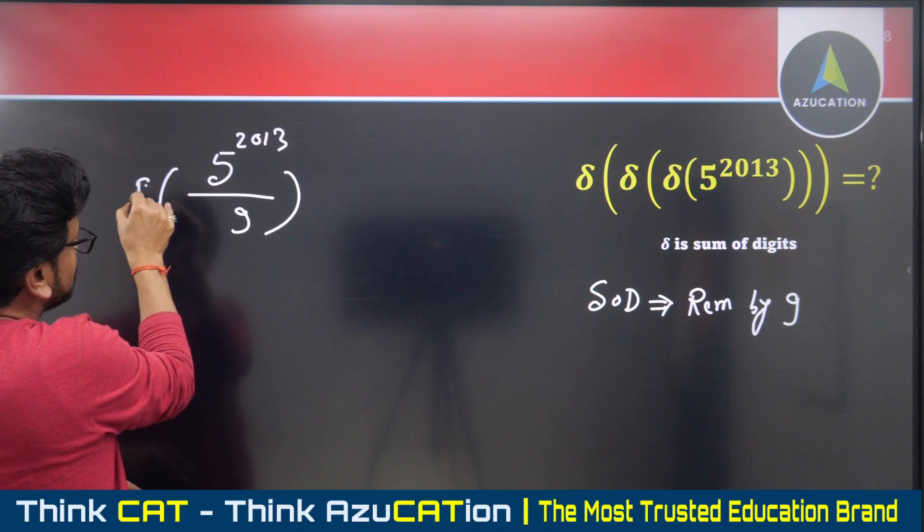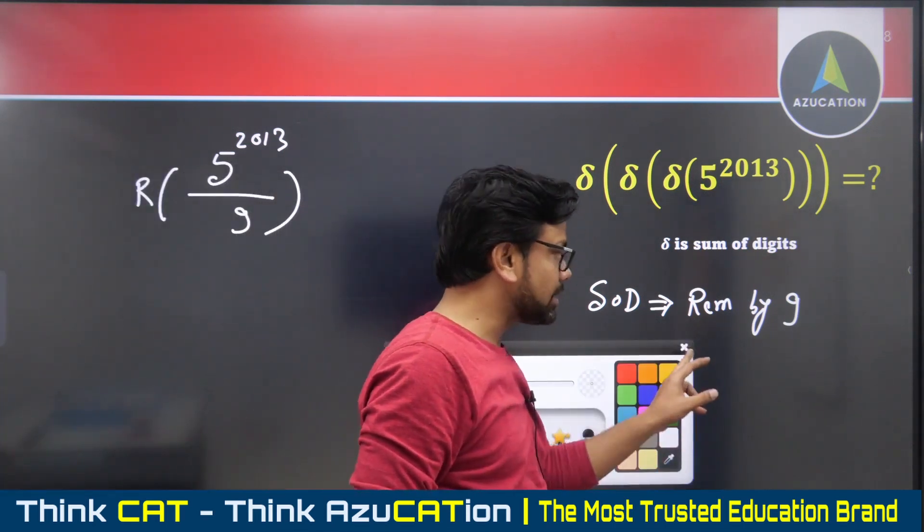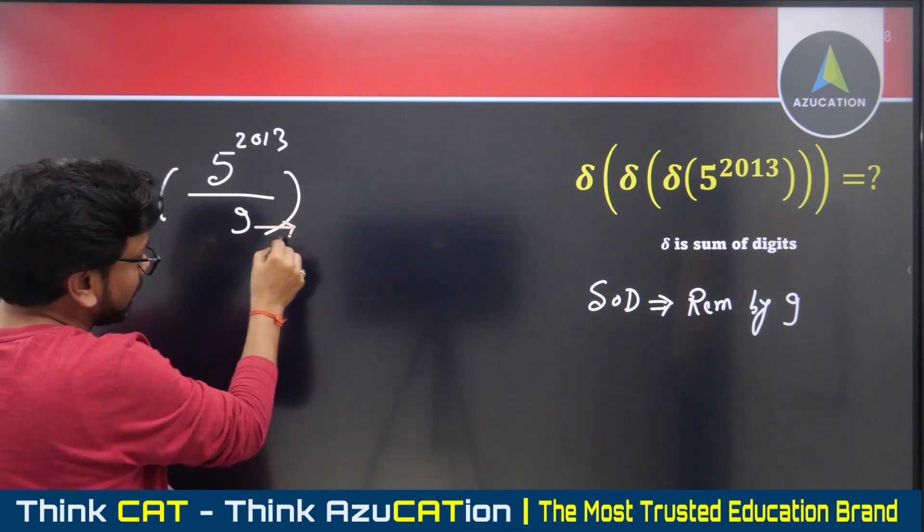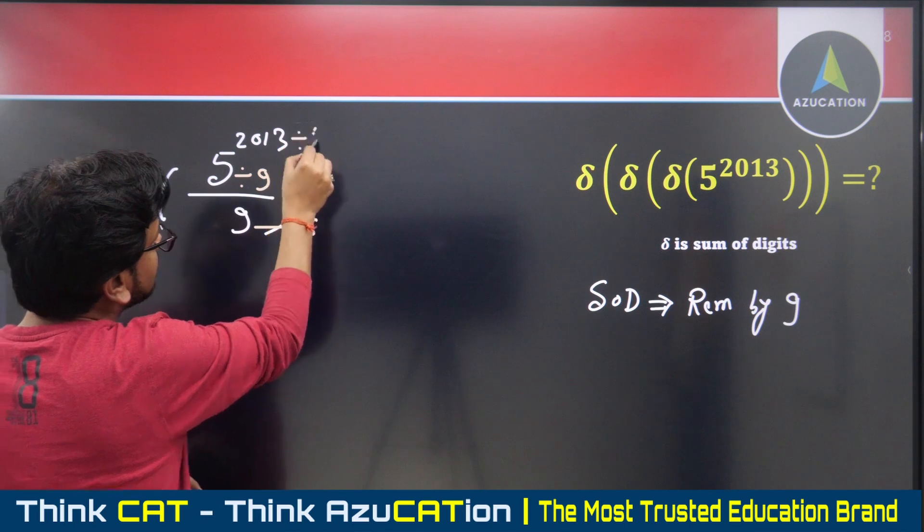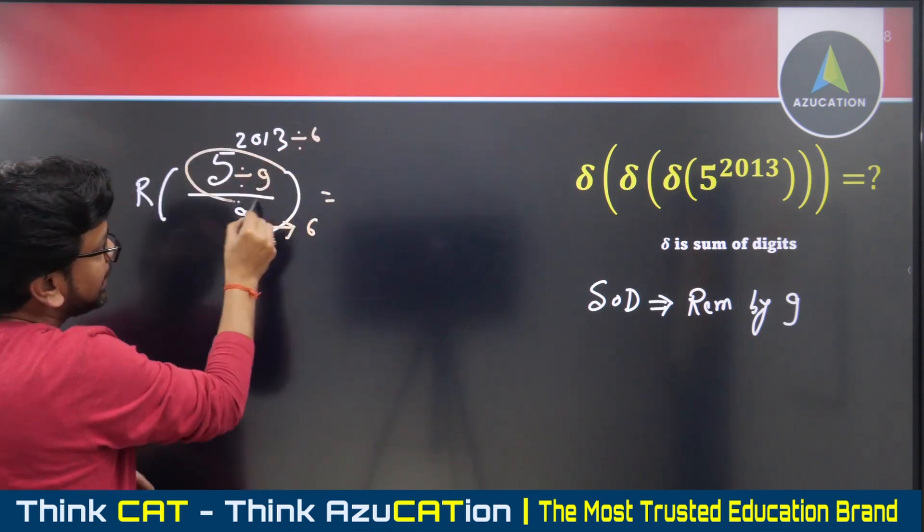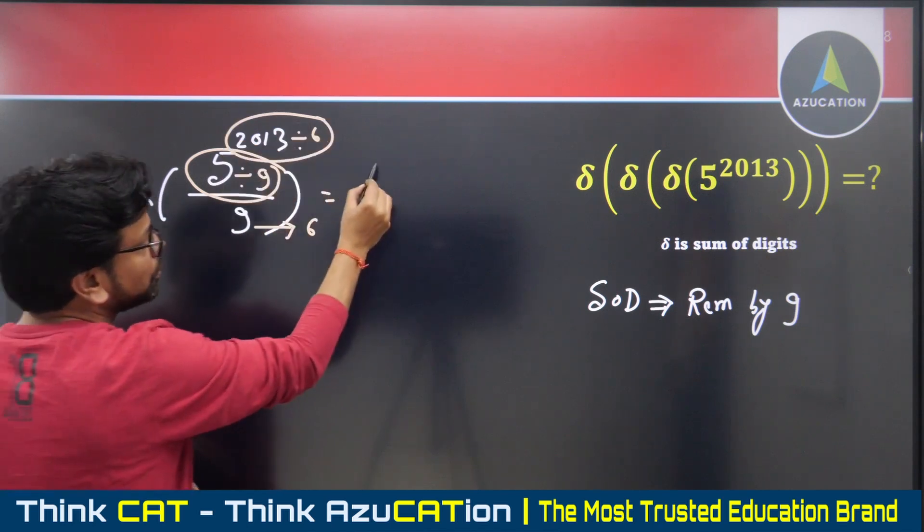This can be solved in two to three ways. I'll solve using the cyclicity method first. The cyclicity order of nine is six. I'll divide this by nine and by six. Since five is less than nine, remainder is five. When divided by six, remainder is three.